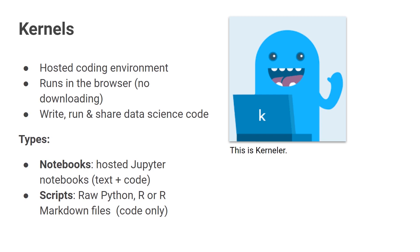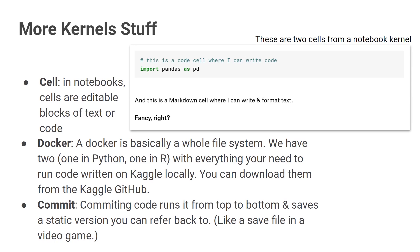There are two types. There are notebooks, which are hosted Jupyter notebooks that let you write text and code together. And then there are scripts, which are raw files — Python 3 only, R, or R Markdown. R Markdown lets you write R code and text next to each other, sort of similar to a Jupyter notebook. And KernelAir is this friendly little bot that will write a kernel for any dataset you upload.